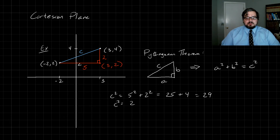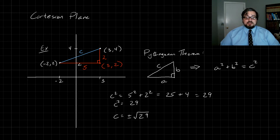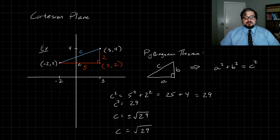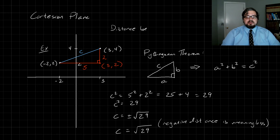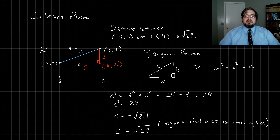So if we want to know the distance between these two points, we can use this triangle and the Pythagorean theorem. The Pythagorean theorem tells us that c squared is equal to five squared plus two squared. Five squared is 25, two squared is 4, so we get 29. We have that c squared equals 29, so c equals plus or minus the square root of 29. We don't actually use the negative answer because negative distances don't make sense. So c equals the square root of 29. The distance between the point negative two comma two and the point three comma four is the square root of 29. If you needed this for an application you would likely plug this into a calculator and get an approximation, but we'll leave it in its exact form: square root of 29.